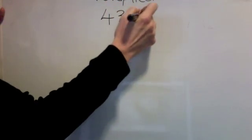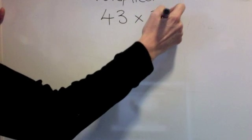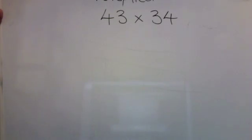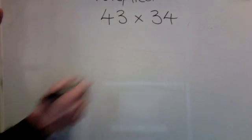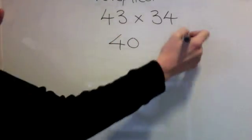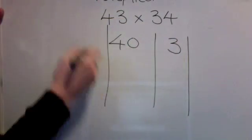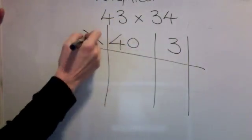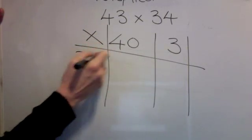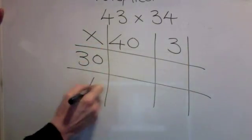Try this one. 43 times 34. Pause the video, have a go. Here's the answer. 40 and 3, 40 and 3 multiplied by 30 and 4.